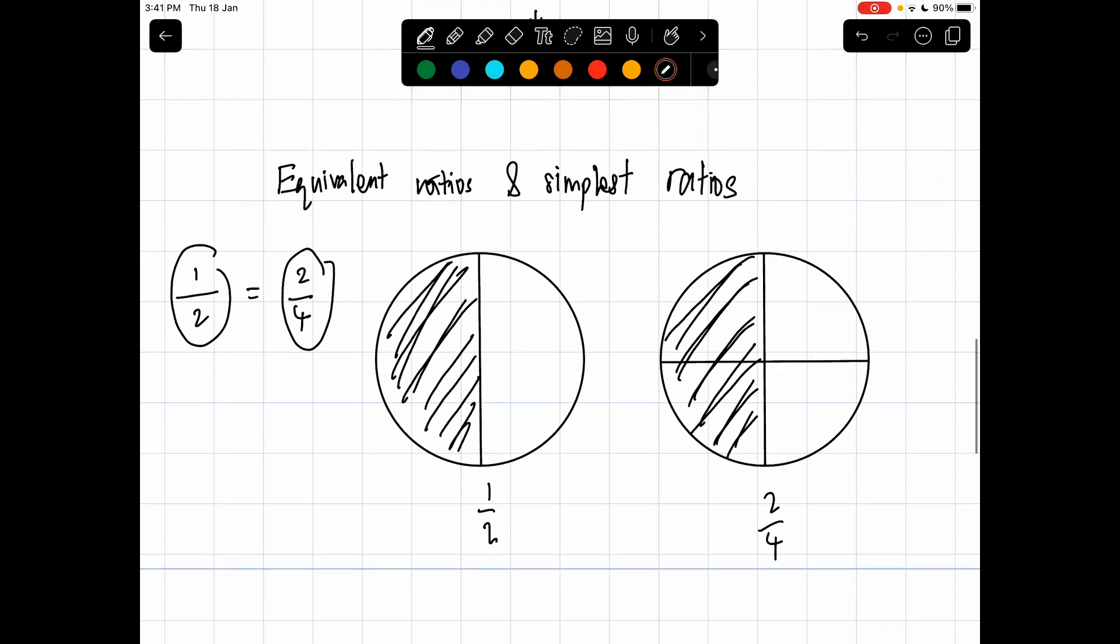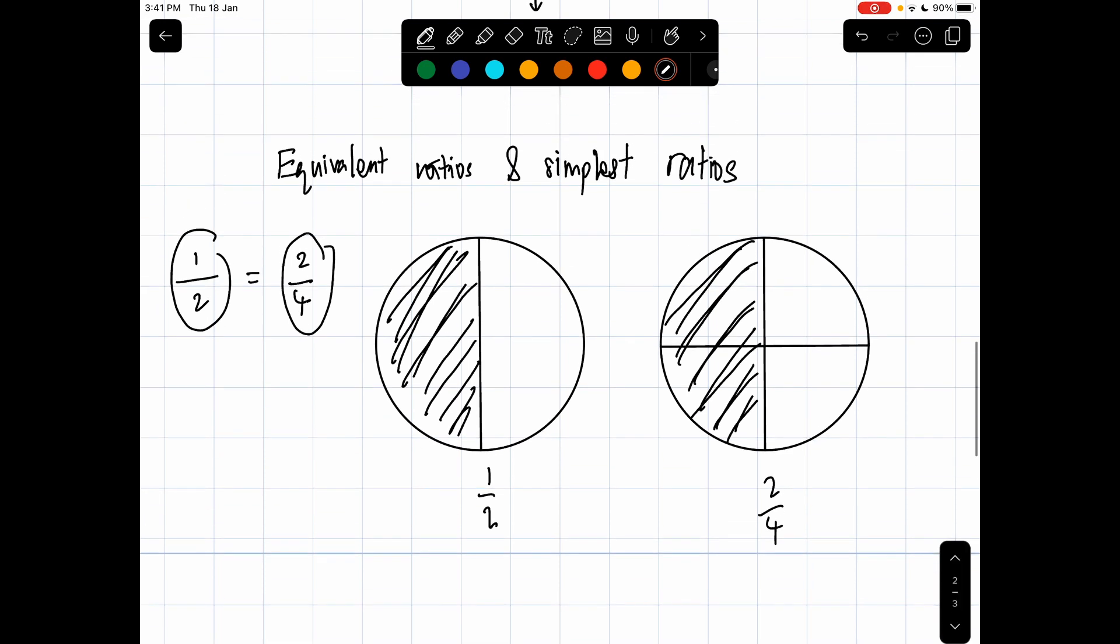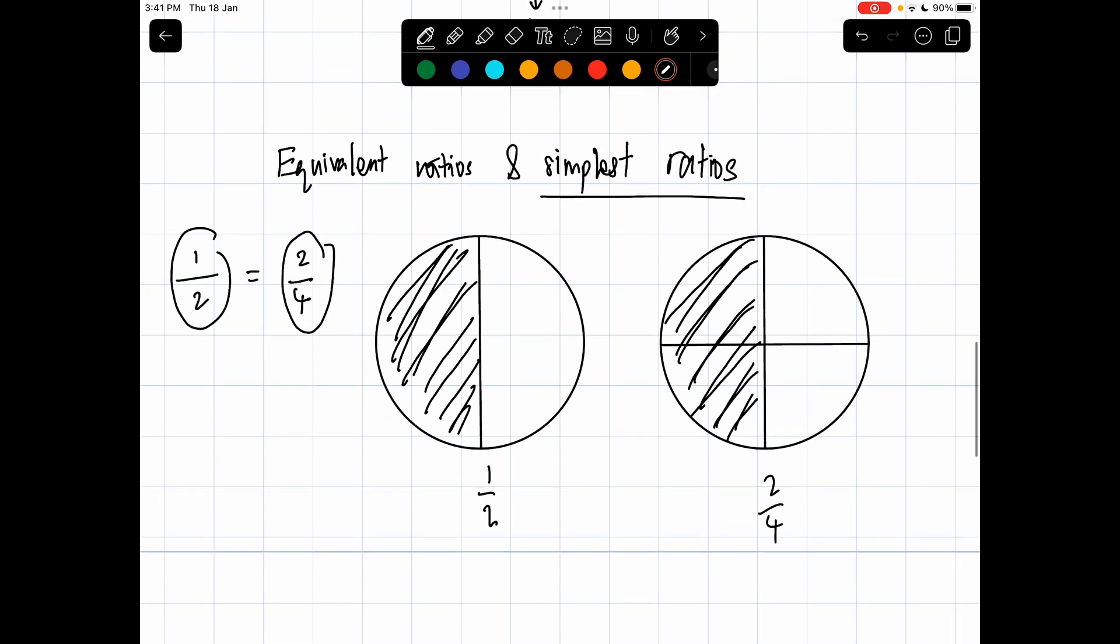So it's always wise to simplify a fraction into its simplest form in order to see the relation between two different fractions. This is where the simplest ratio concept comes into play.